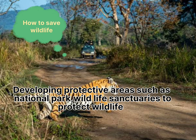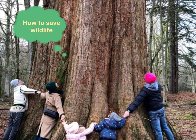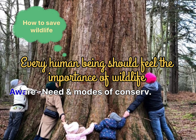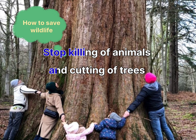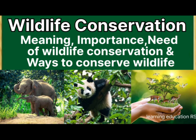We should develop protective areas such as national parks and wildlife sanctuaries to protect plants and animals in their natural habitat. Hunting of animals should be banned. Every human being should feel the importance of wildlife — we should be aware of the need for conservation, stop the killing of animals, and stop cutting trees for personal reasons. This way we can save and protect wildlife because it is beneficial for us.